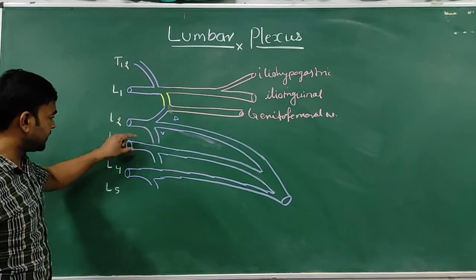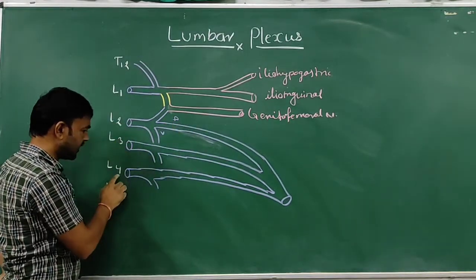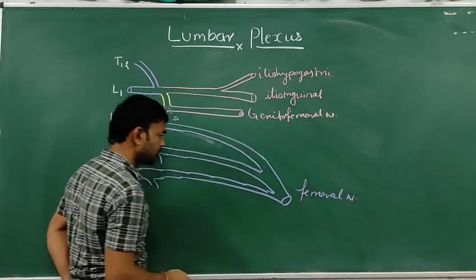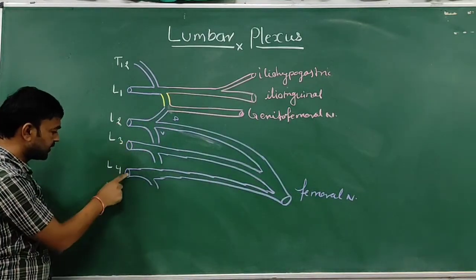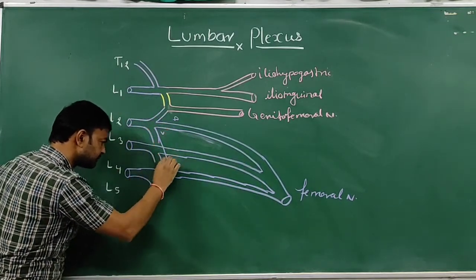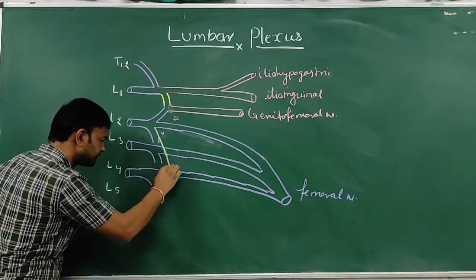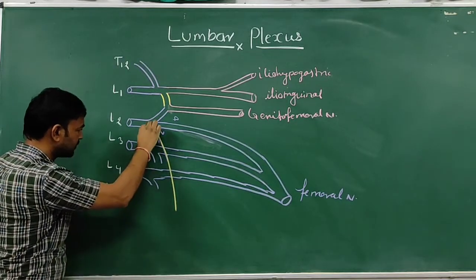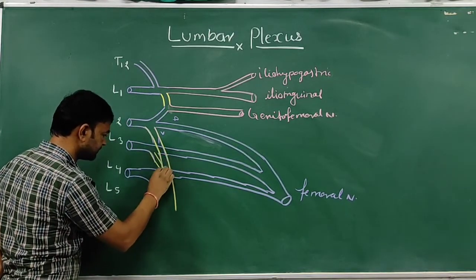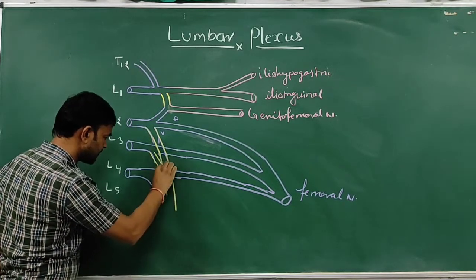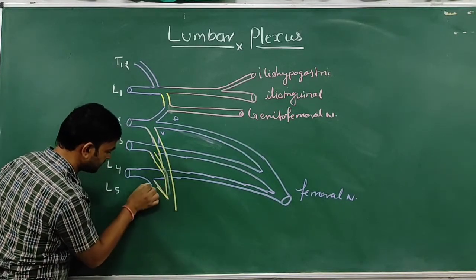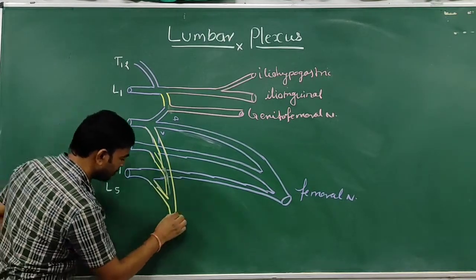The dorsal divisions from L2, L3, and L4 form the femoral nerve. The ventral divisions of L2, L3, and L4 form the obturator nerve.